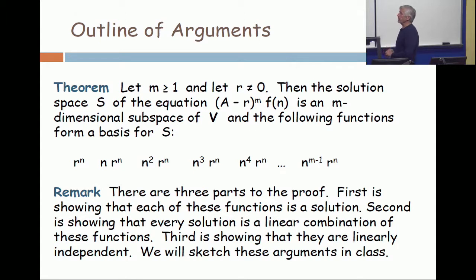Let m be a positive integer and let r be a non-zero complex number. Then the solution space S of the equation (A - r)^m f(n) = 0 is an m-dimensional subspace of V and the following functions form a basis: r^n, nr^n, n² r^n, and so on. We've written this up before.